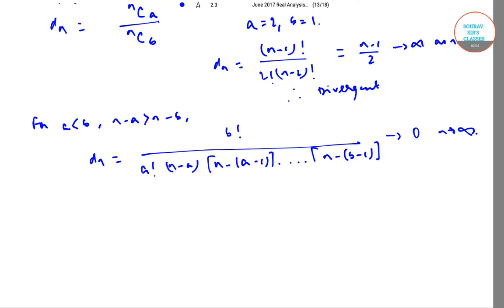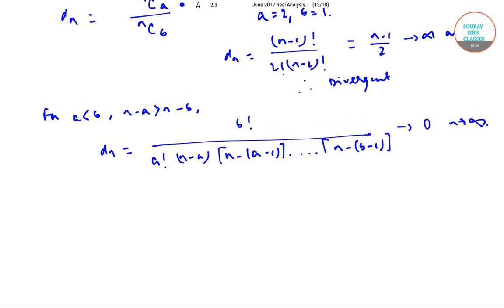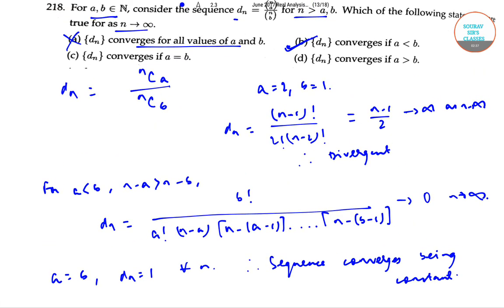Now, checking for option C: for a = b, d_n equals 1 for all n. Therefore, the sequence converges, since it is constant. So option C is again correct.